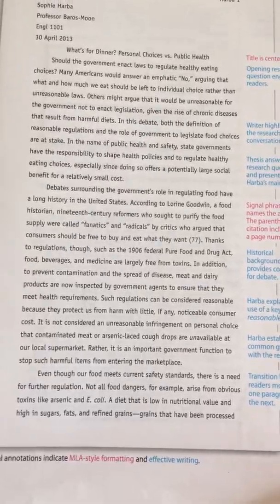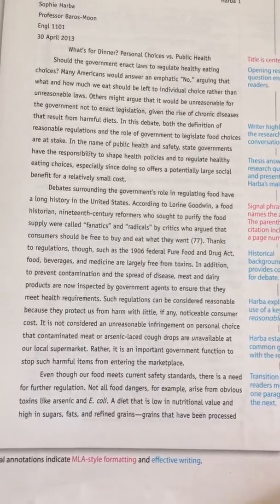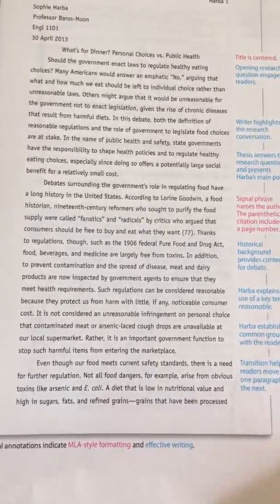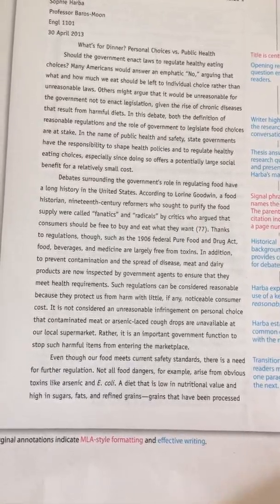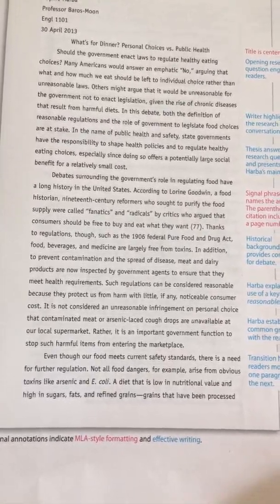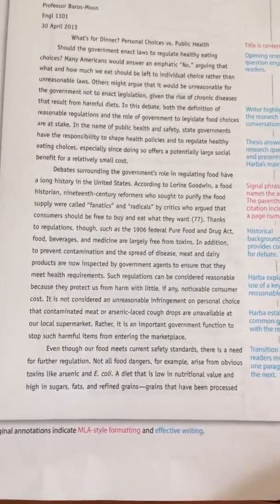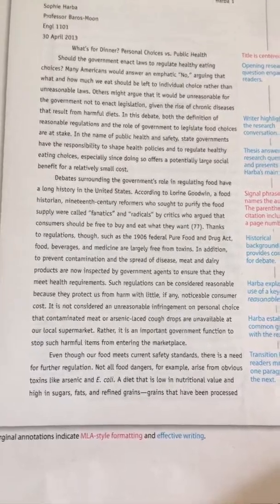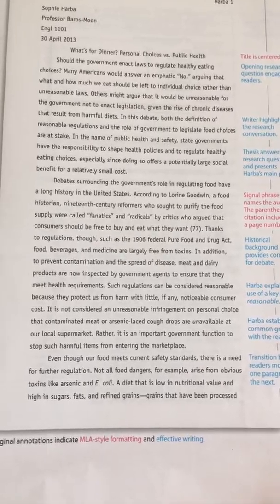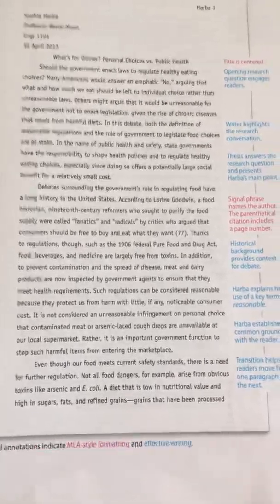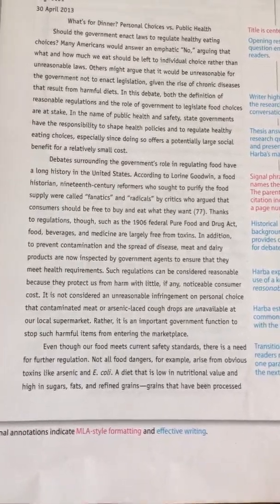Now she gets into the explanation: 'Such regulations can be considered reasonable because they protect us from harm with little, if any, noticeable consumer cost. It is not considered an unreasonable infringement on personal choice that contaminated meat or arsenic-laced cough drops are unavailable at our local supermarket. Rather, it is an important government function to stop such harmful items from entering the marketplace.' So there's her first body paragraph — nicely formatted with the topic sentence, information, and then the student's explanation.